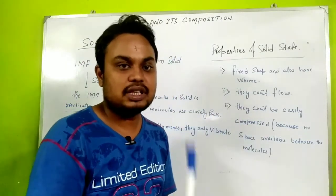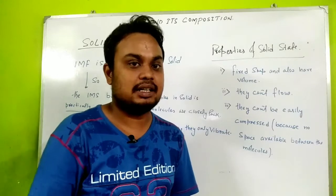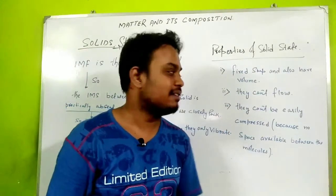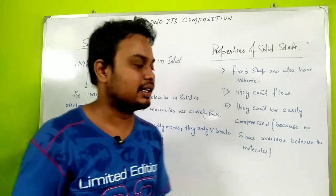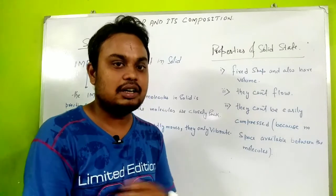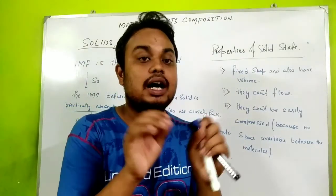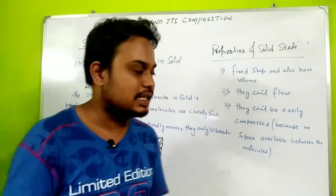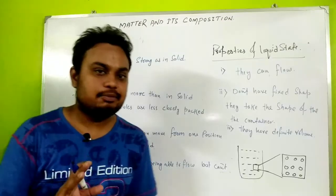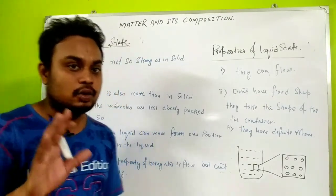Properties of solid state: solids have a fixed shape and fixed volume because the molecules are closely packed. Solids cannot flow. Solid particles are closely packed, so they cannot be easily compressed — there is practically no intermolecular space, so there is nowhere for the molecules to go when compressed.